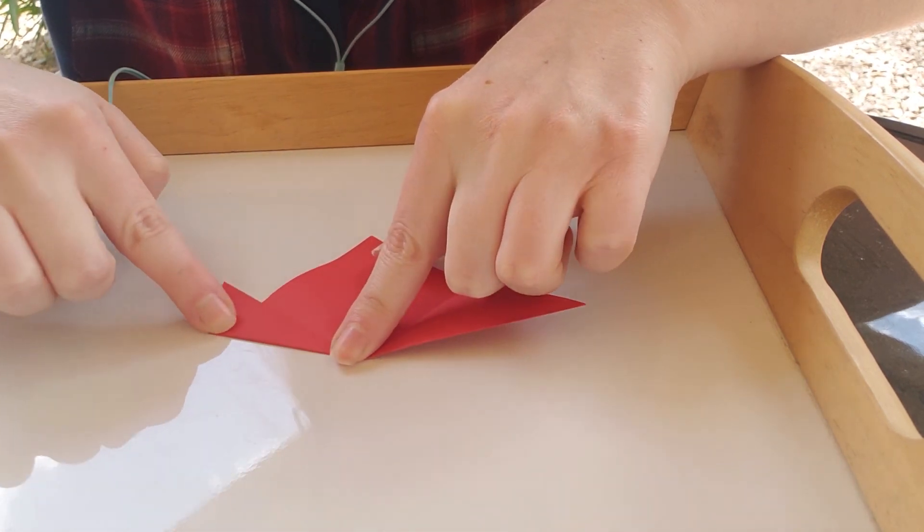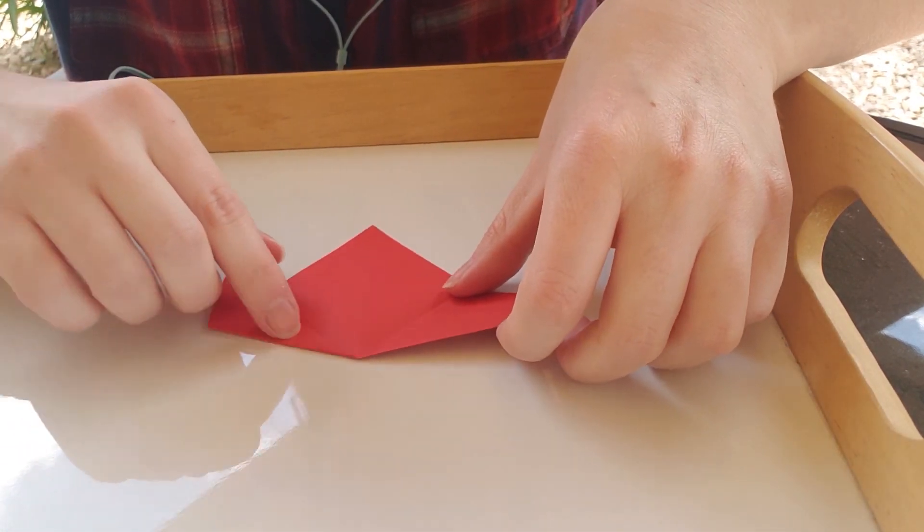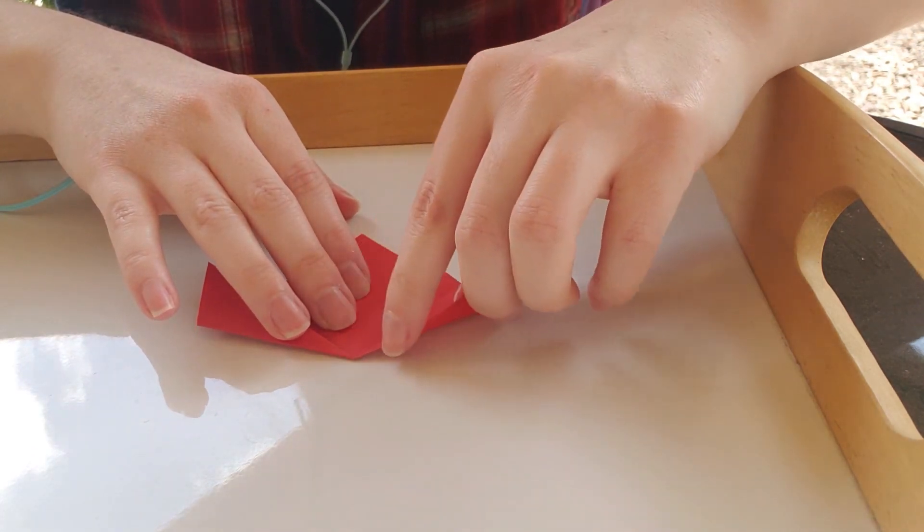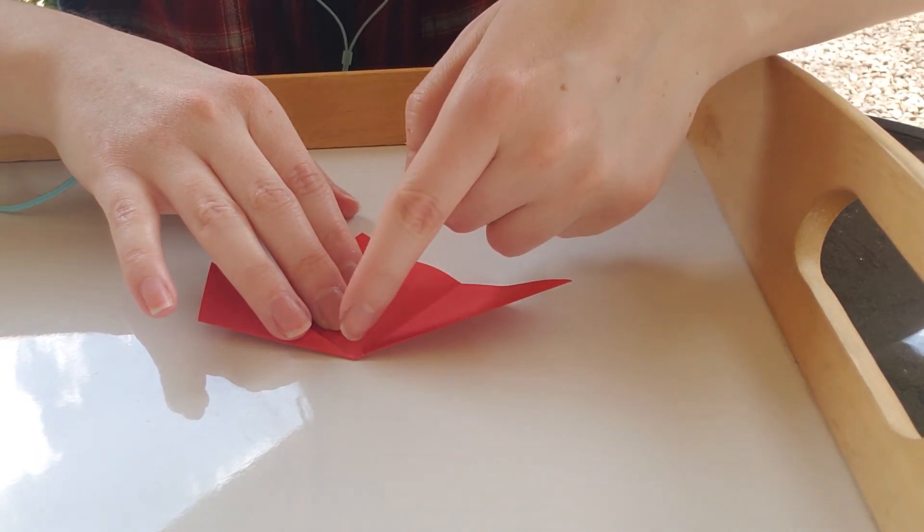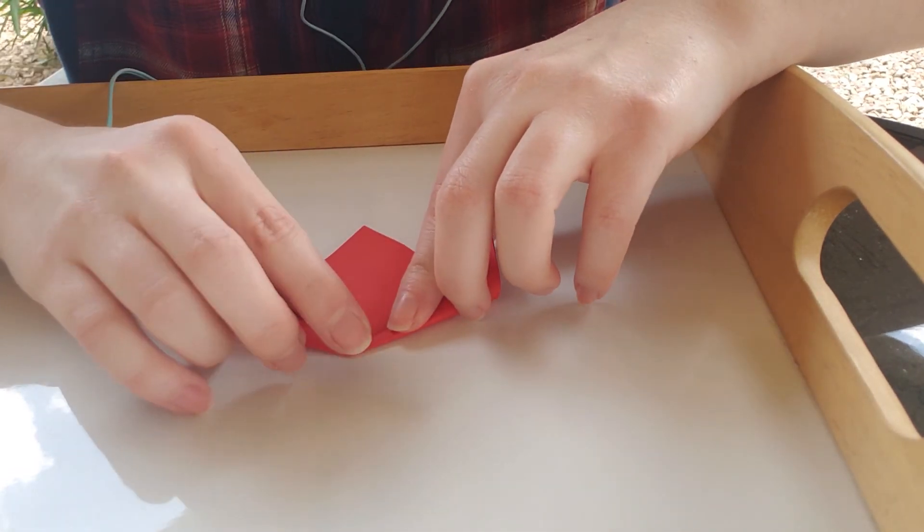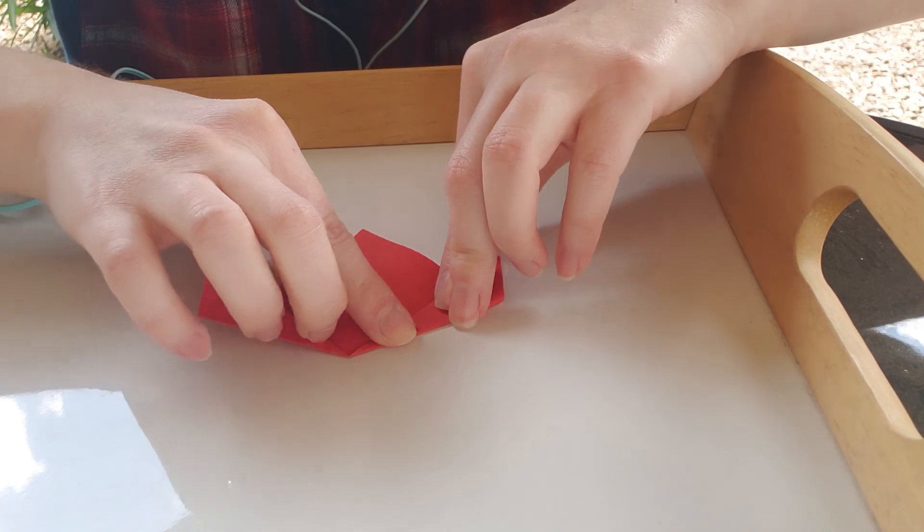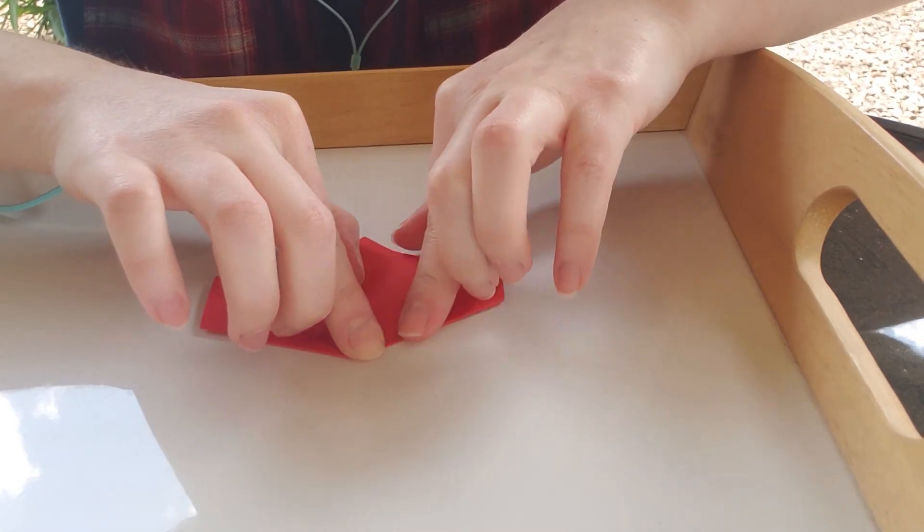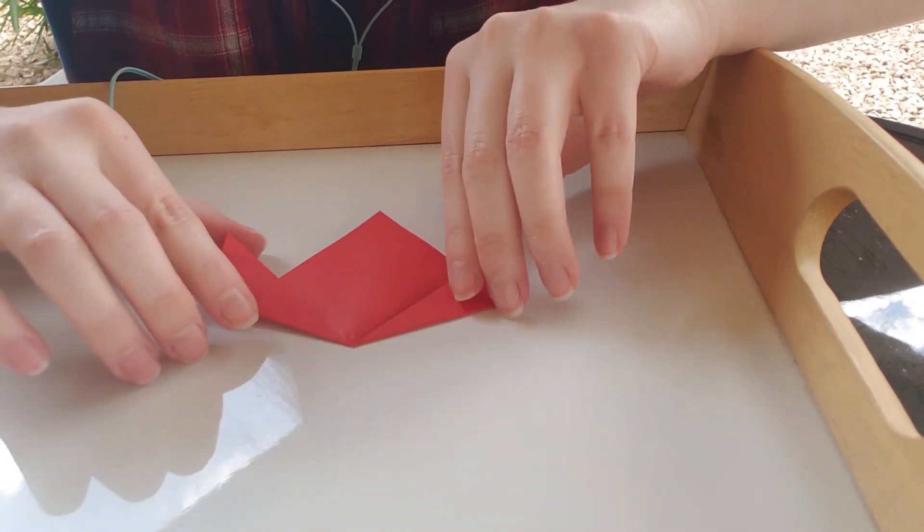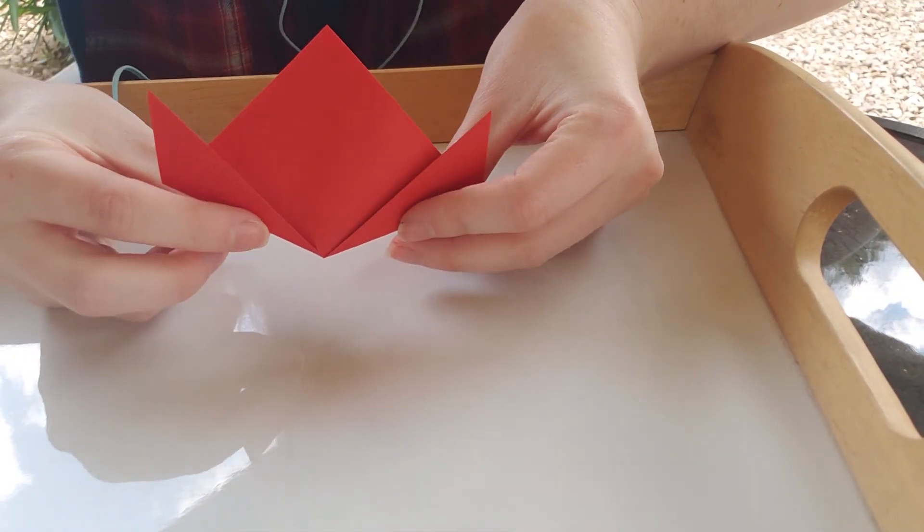There's one side and then grab this other one, bring it up again so this bottom edge runs along this crease line. Alright, so now we've got a shape that looks like this.